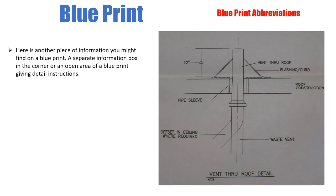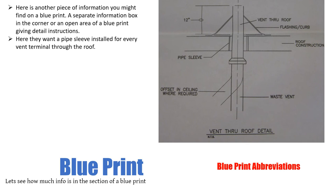Here's another piece of information you might find on a blueprint: a separate information box in the corner or an open area of a blueprint giving detailed instructions. Here they want a pipe sleeve installed for every vent terminal through a roof. This box could have any information in it for electrical blueprints, HVAC blueprints, plumbing blueprints, whatever the case is. They may or may not have a box like this just giving little detail specifications for something that needs to be dealt with.